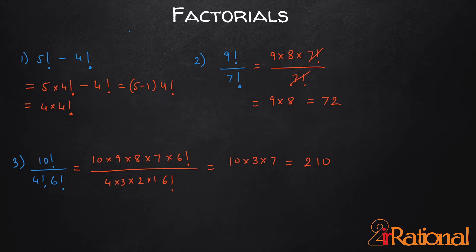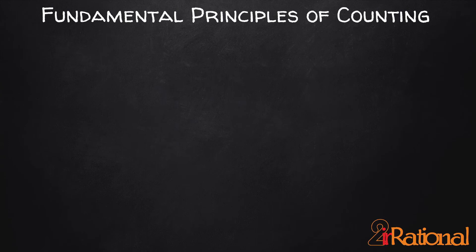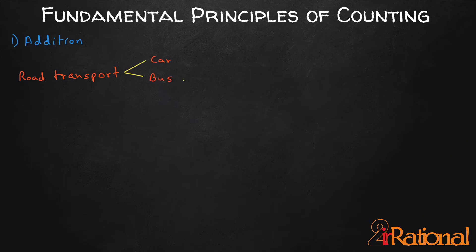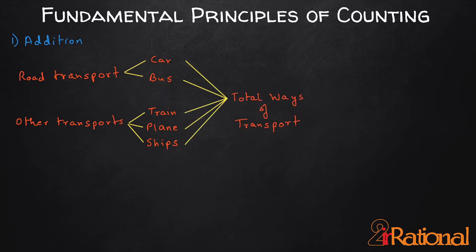Factorials are used to calculate the total number of ways of doing a job — let's call it counting. The first fundamental principle of counting is addition. If I have two ways of travelling by road transport — say car and bus — and other ways are train, plane, and ship, in total I have 5 ways of transport: 2 road options plus 3 other options gives 5. So when we have alternatives of the same job, we add the ways of doing them.